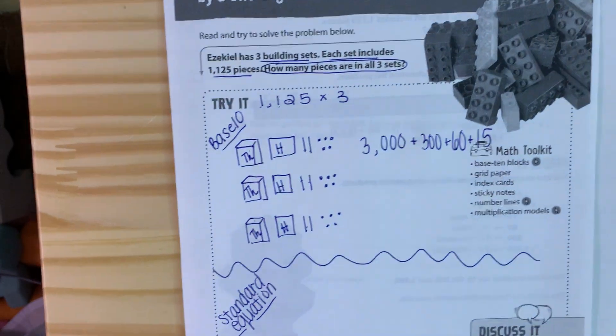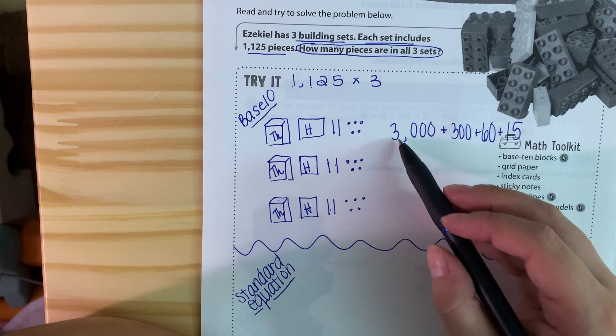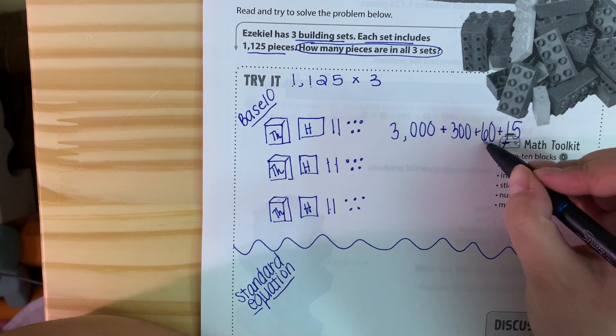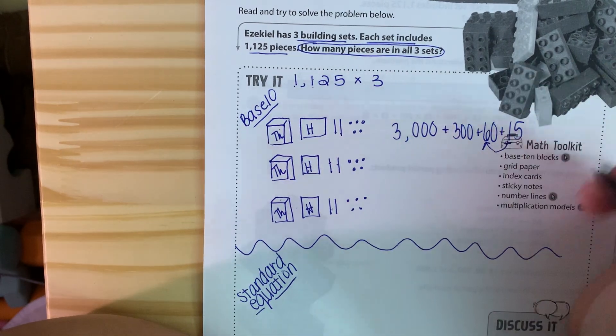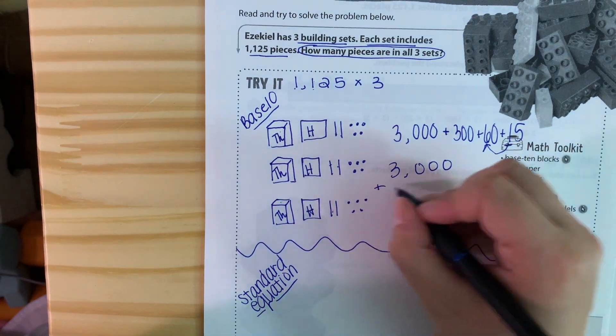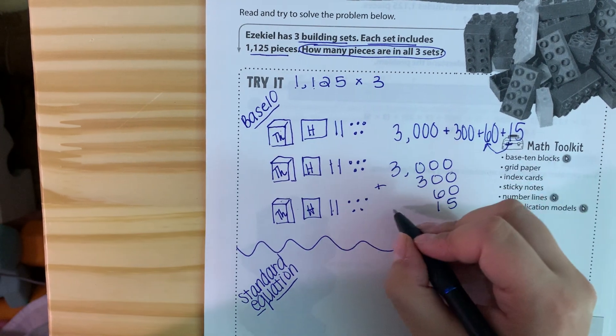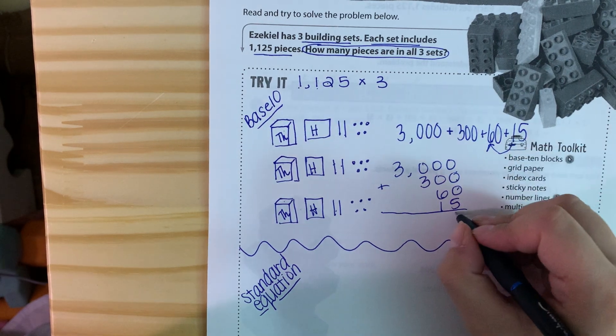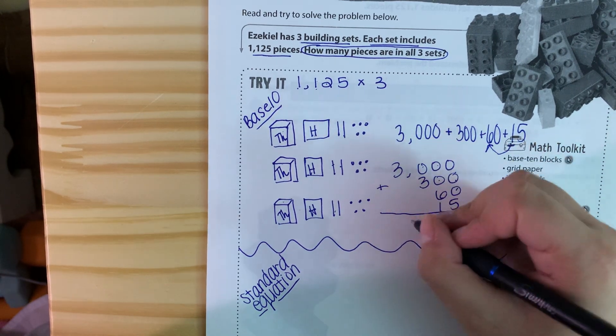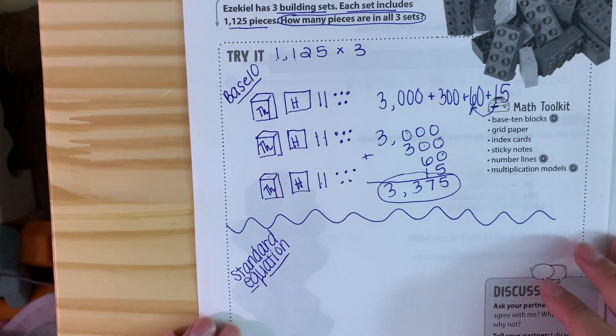So then you can just add those together. So we have 3,375 because we have this 10 that would bump up to the 7, and again we can stack it if it helps you. You can also set it up like this. So then we have 0 plus 0 plus 0 plus 5 so it's 5, 6 plus 1 plus 0 plus 0 is 7, 3 plus 0 is 3, 3 plus nothing is 3. So our answer is 3,375.